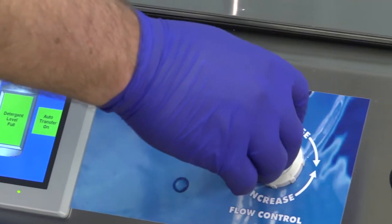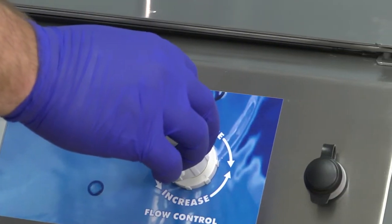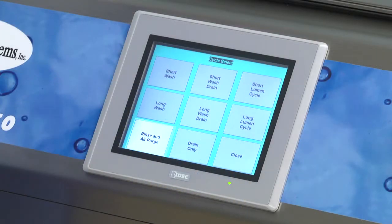Once a lumen wash cycle has started, you can adjust the flow control as needed. The Rinse and Air Purge button can be used when you want to perform an extra rinse and air purge. Drain Only simply empties a basin that was left full.